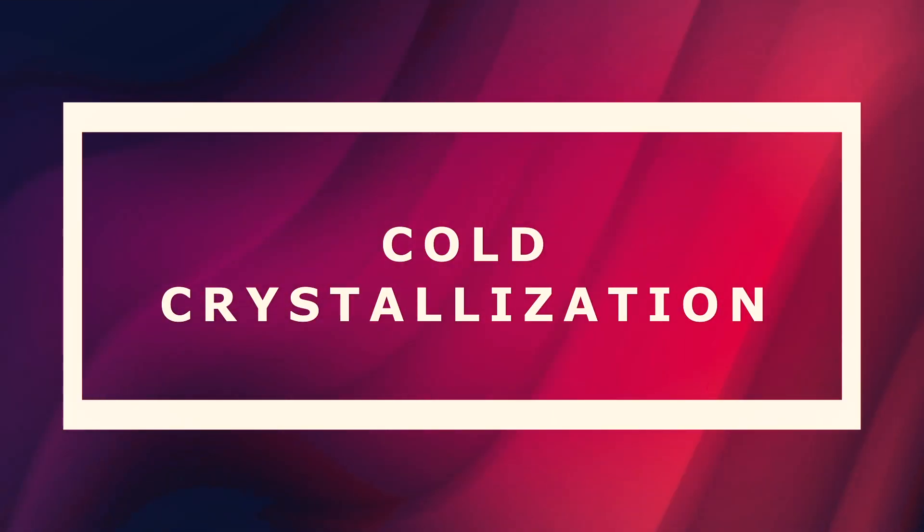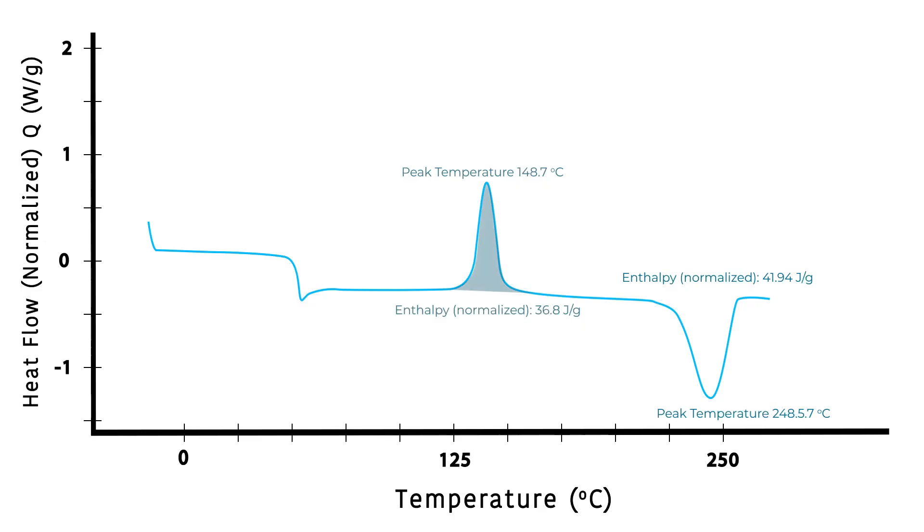At a certain temperature above the glass transition temperature, the polymer chains begin to form an orderly pattern leading to an exothermic reaction releasing energy. This is called the cold crystallization. This can be seen in the heating part of the DSC trace.